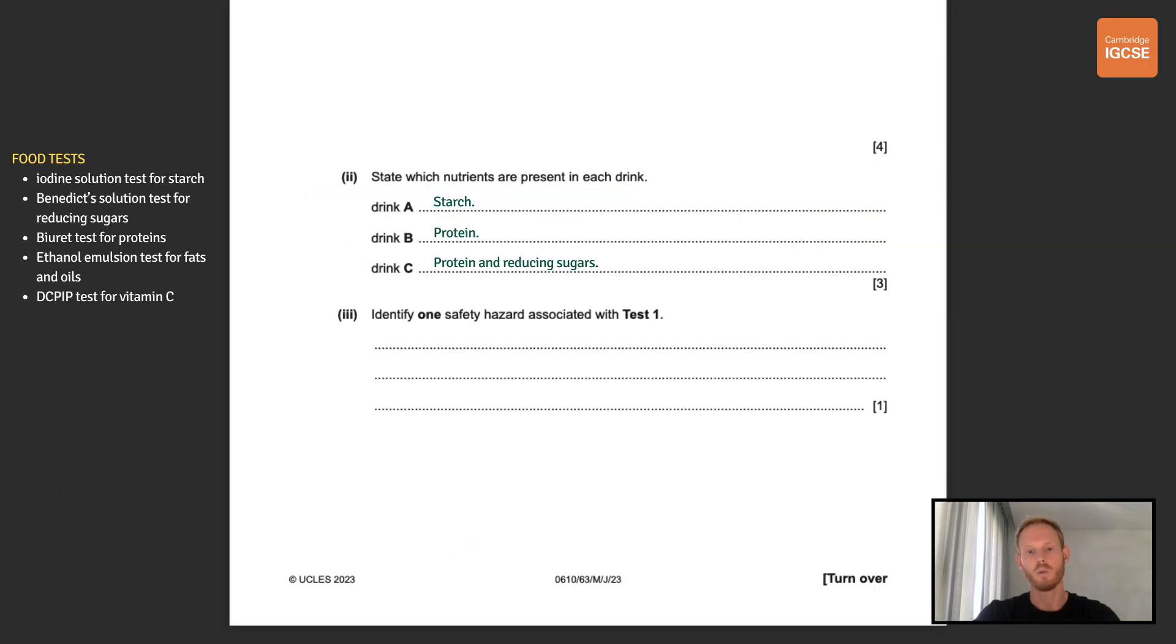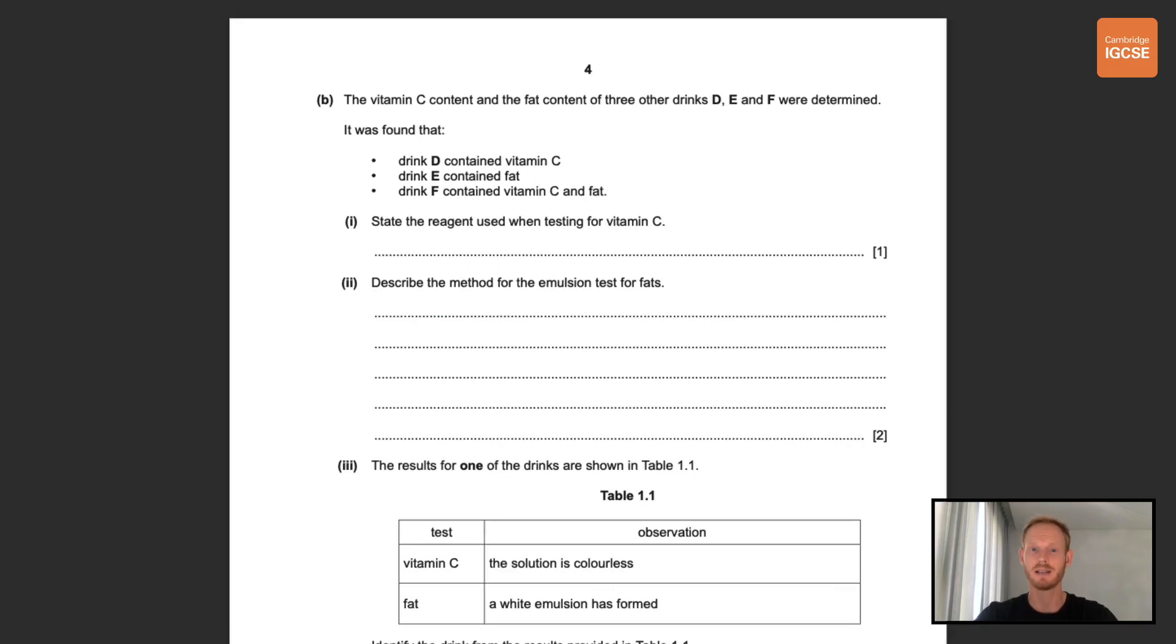Next identify one safety hazard associated with test 1. They love including questions in papers 5 and 6 on safety. So test 1 was the Benedict's test and Benedict's reagent is both irritant and corrosive. The test also involves heating the reagent and the test substance in a water bath so you could have also put hot water as an alternative hazard. Next the vitamin C content and the fat content of three other drinks D, E and F were determined. It was found that drink D contained vitamin C, drink E contained fat and drink F contain vitamin C and fat. State the reagent used when testing for vitamin C and that is DCPIP.